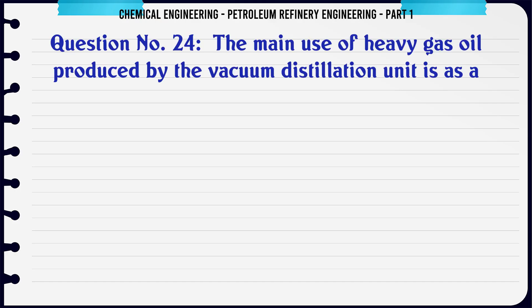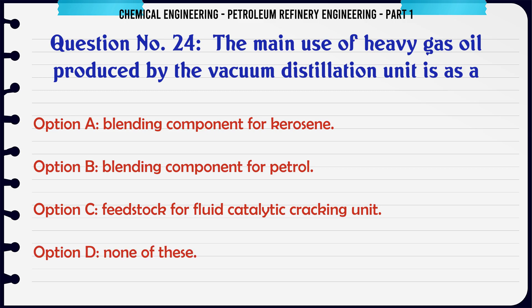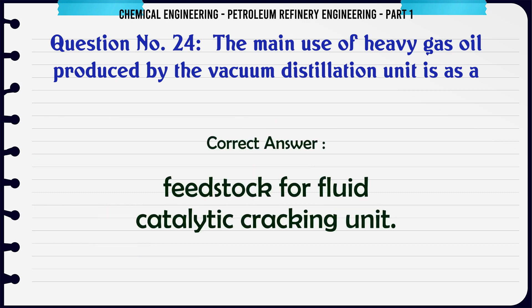The main use of heavy gas oil produced by the vacuum distillation unit is as a: A. Blending component for kerosene, B. Blending component for petrol, C. Feedstock for fluid catalytic cracking unit, D. None of these. The correct answer is Feedstock for fluid catalytic cracking unit.